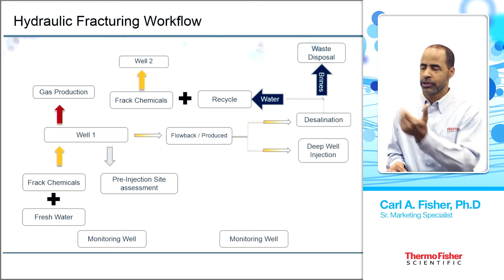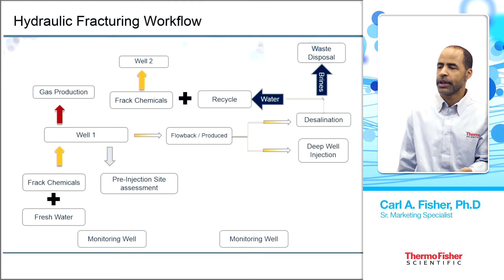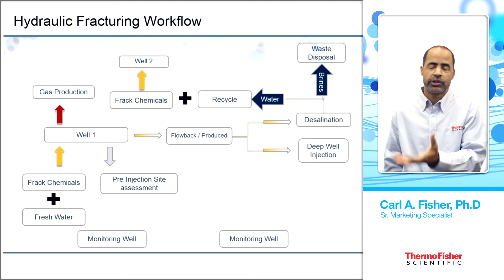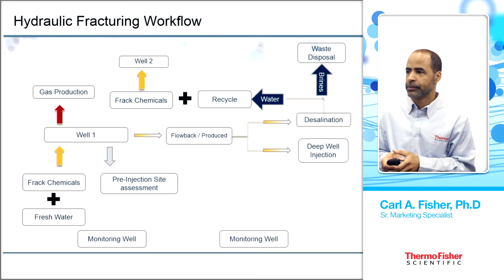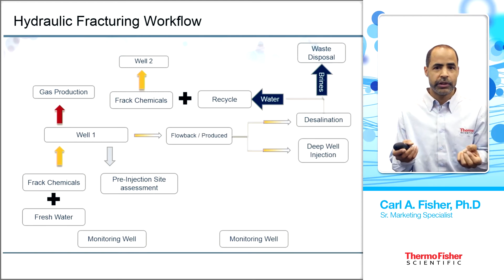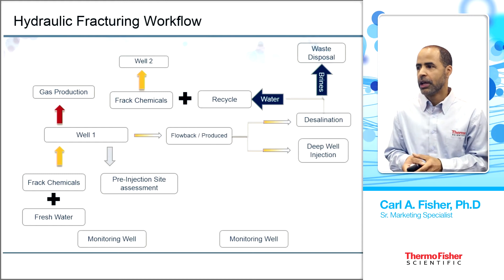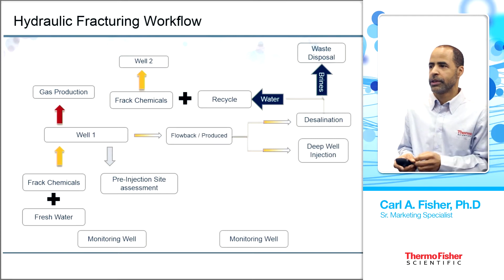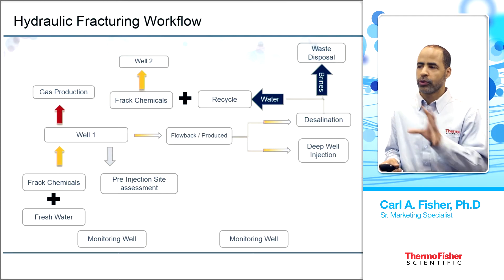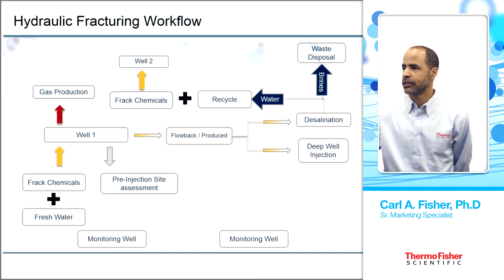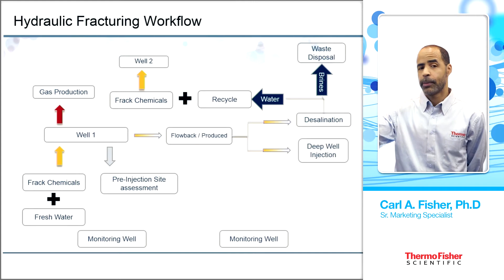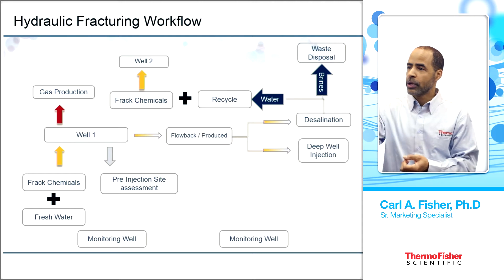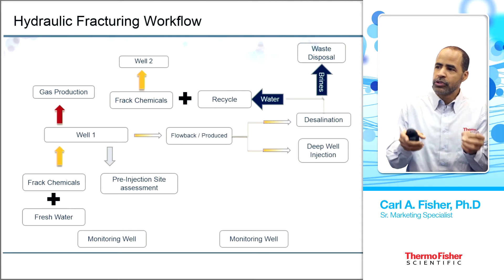That fresh water is used for the first well. A fracturing event occurs, you get gas or oil production, and then you have waste generated from that—water coming up. Typically you're going to have flowback or produced water. That can be quite expensive to dispose of. One way this is done is by deep well injection. The other, which is being done more and more frequently, is the water is recycled. It needs to be desalinated, producing a brine that's much easier to dispose of than the full volume of water. You get recycled water that can be used for another fracturing event.